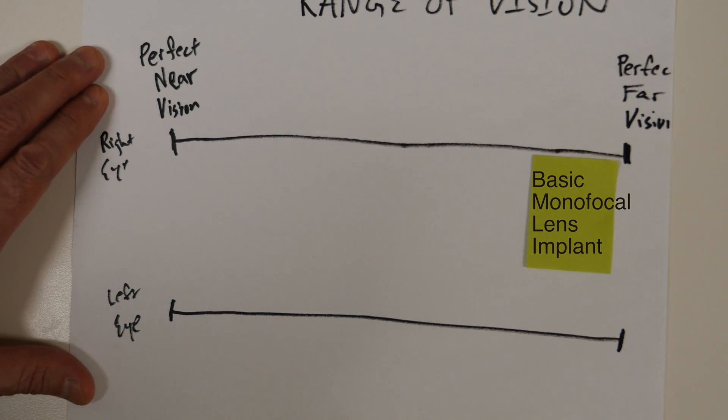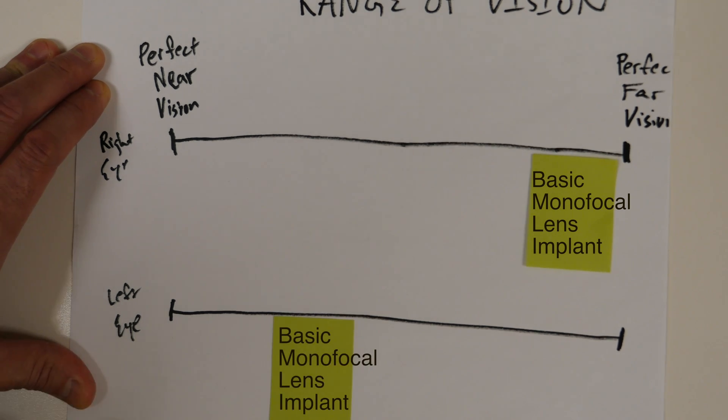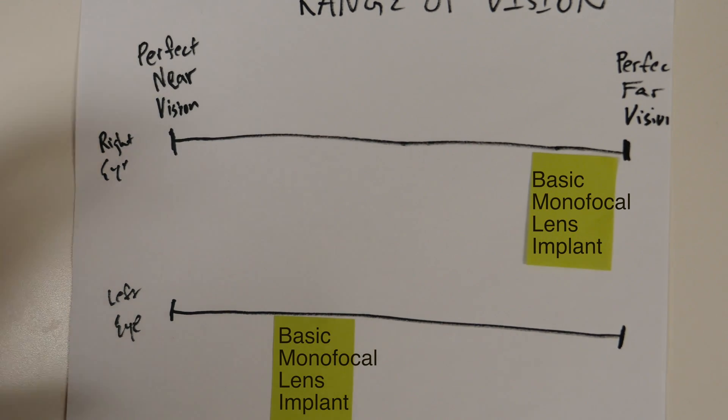And if we do monovision and we make your right eye your far eye, we make your left eye your near eye, you'll see near but over a very narrow range. You'll see far over a very narrow range. That works well for most people.